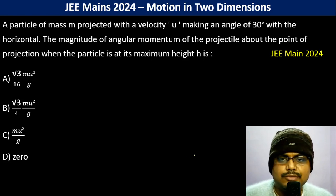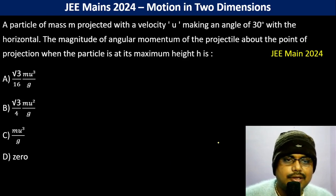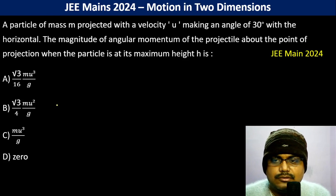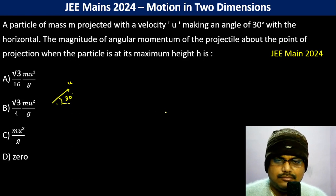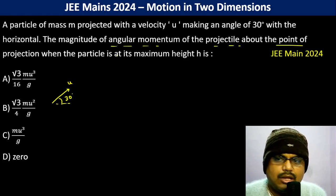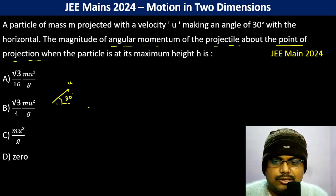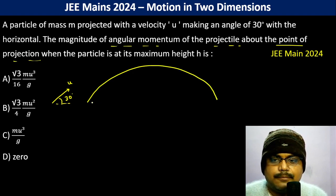A particle of mass M is projected with velocity u making an angle 30 degrees with the horizontal. The magnitude of the angular momentum of the projectile about the point of projection when the particle is at maximum height is: this is an angular momentum problem.